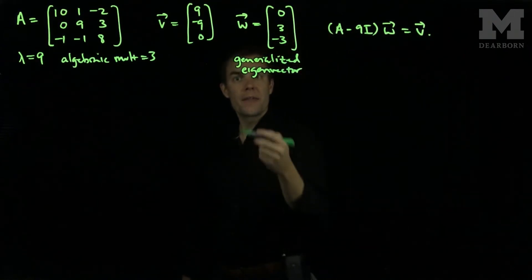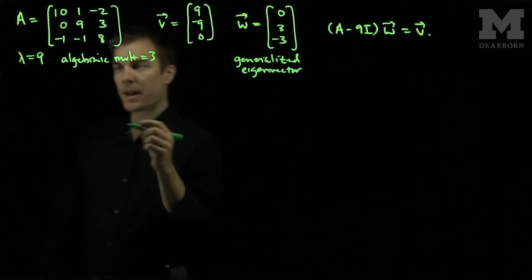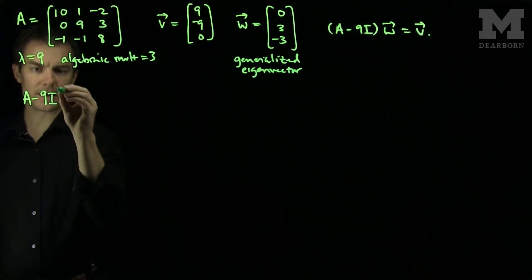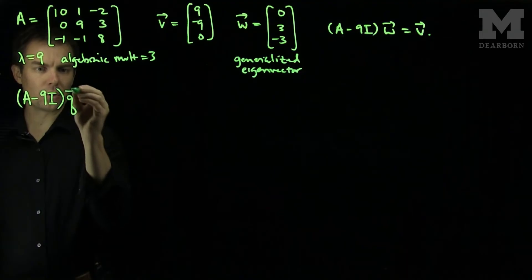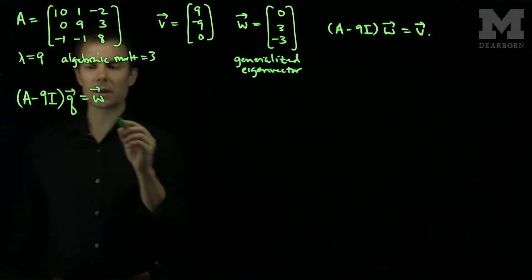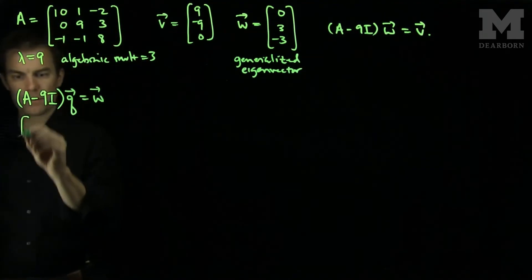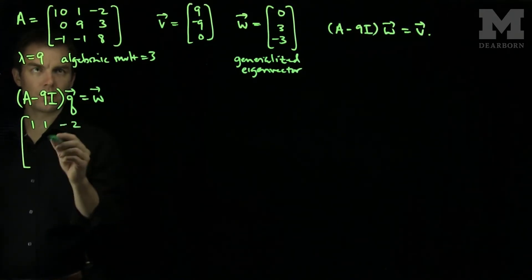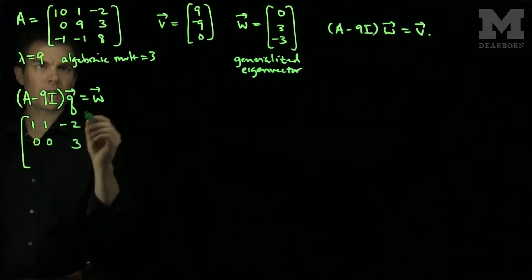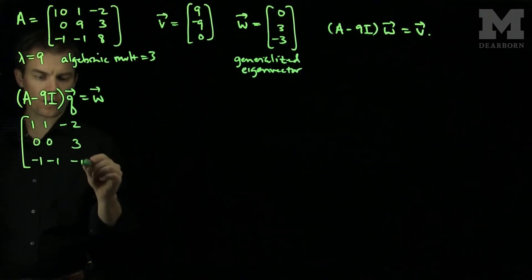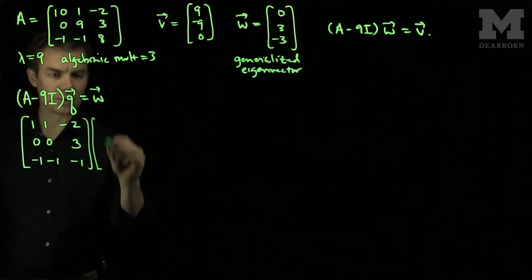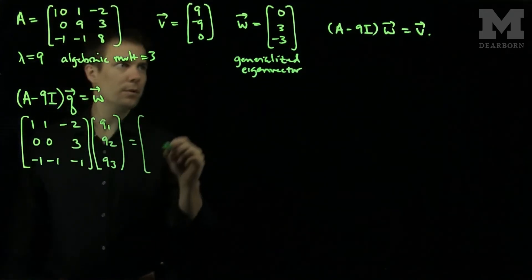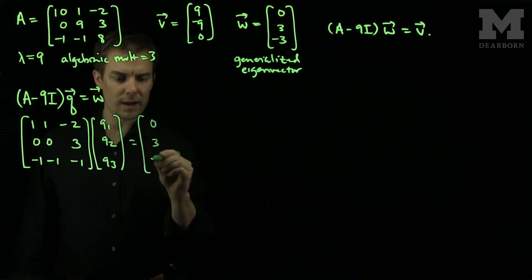Now we'll find the next generalized eigenvector. It is a solution to the equation (A minus 9 times the identity) applied to q equals w. So we have the matrix (1, 1, negative 2 / 0, 0, 3 / negative 1, negative 1, negative 1) applied to (q1, q2, q3) equals (0, 3, negative 3).